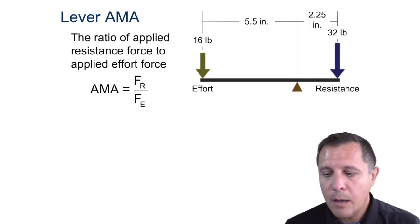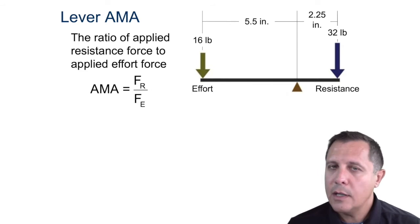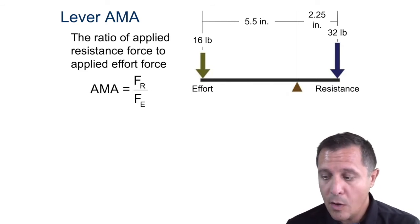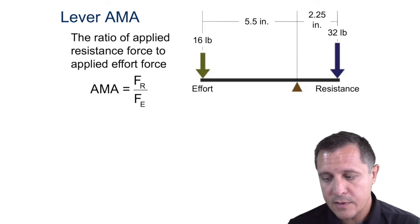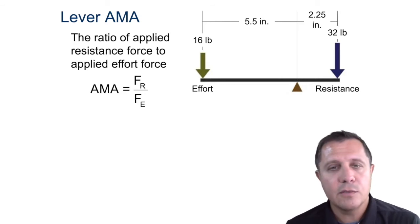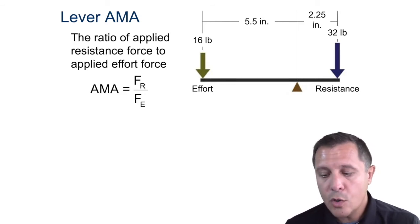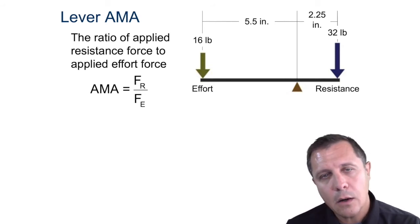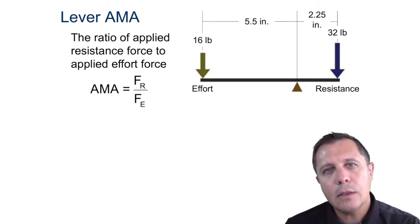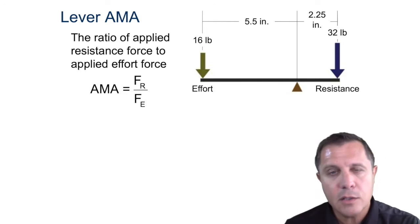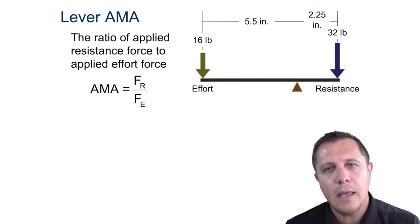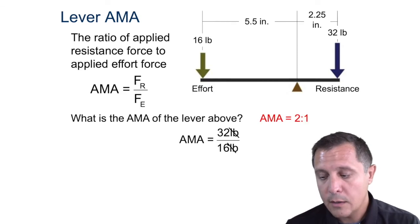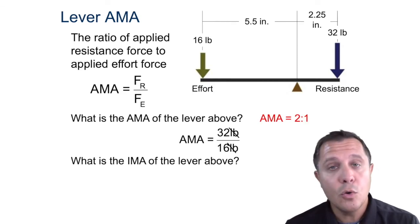The AMA you could calculate as well — we calculate AMA by forces. So if we have an effort force of 16 and a resistance force of 32, you can do the calculation. The AMA is going to be the resistance force divided by the effort force. You should get an AMA of two, or 2 to 1.